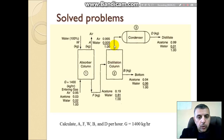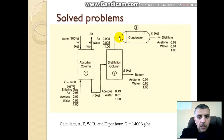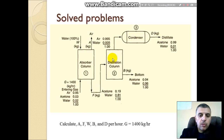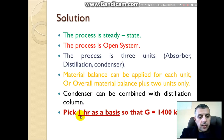The condenser can be combined with the distillation column because there is no change in mass — the output from the distillation is the same as the output from the condenser. The condensation process involves only a phase change from vapor to liquid, without any change in mass. Therefore, units two and three can be combined.